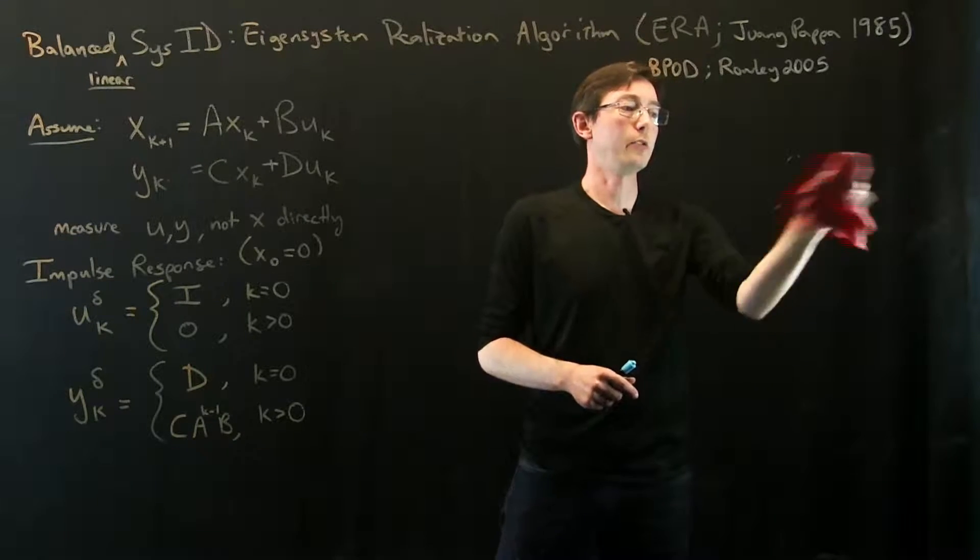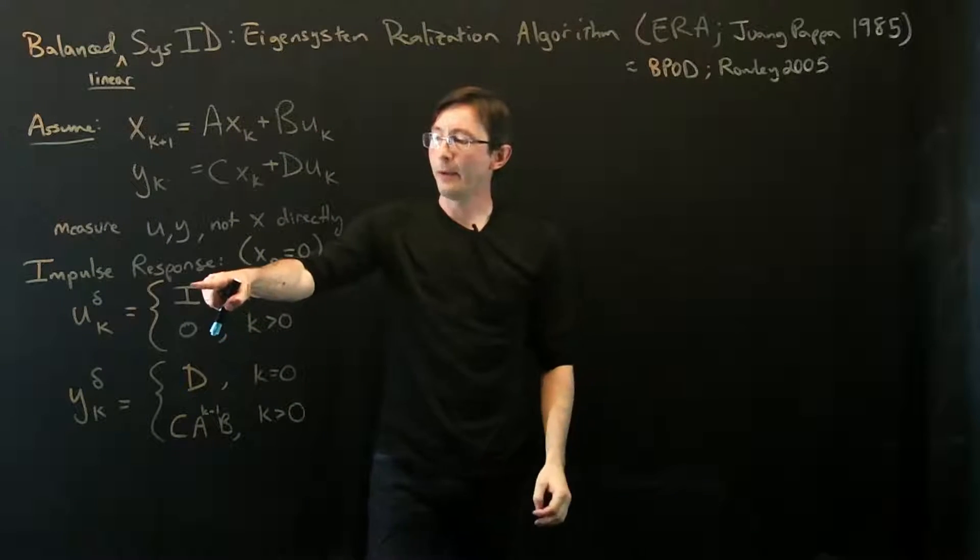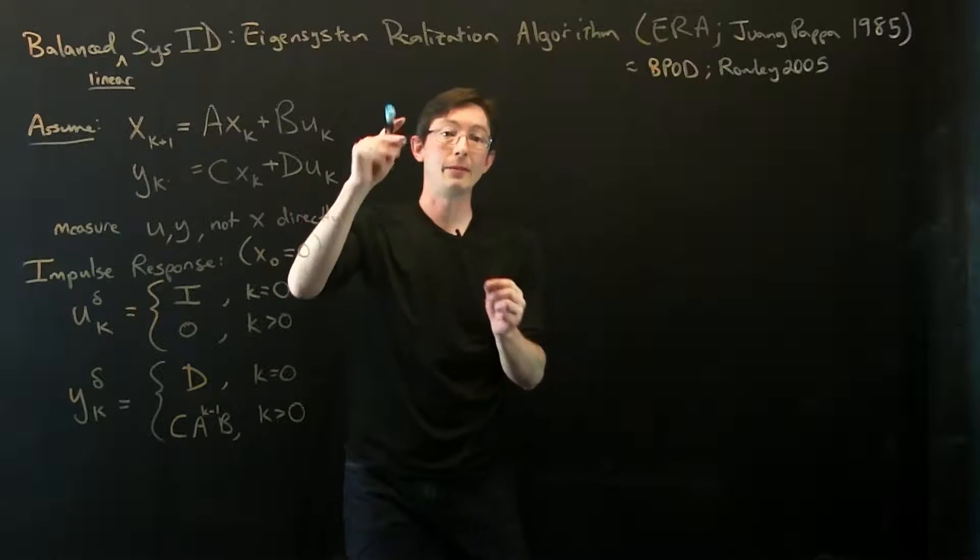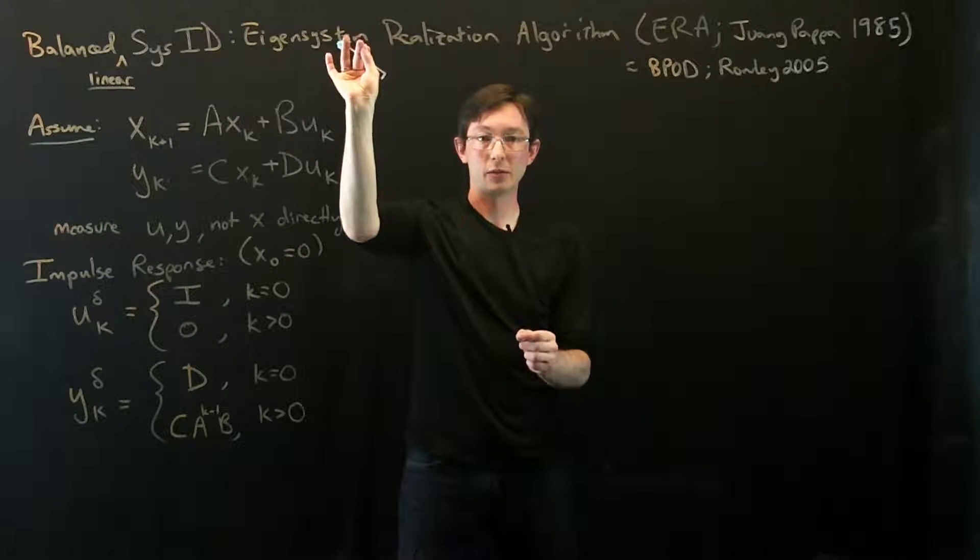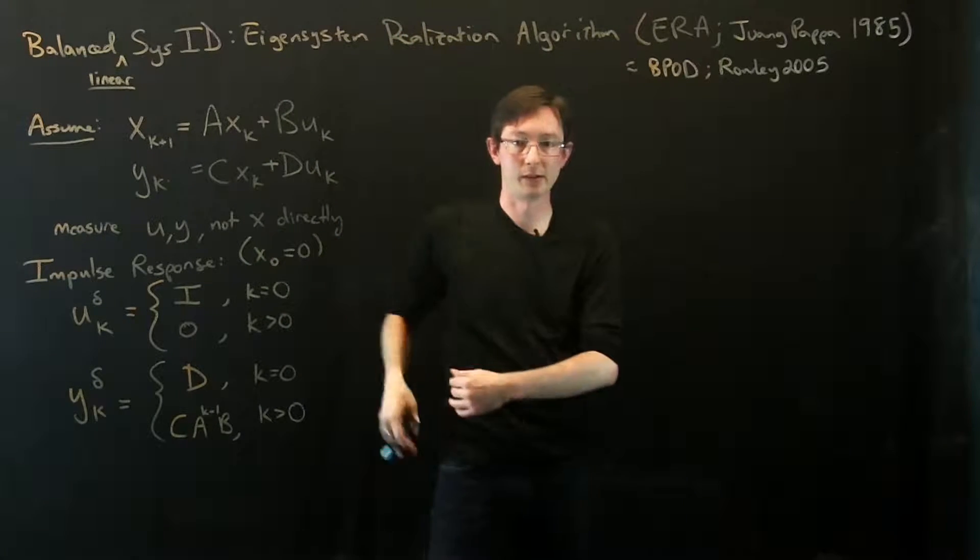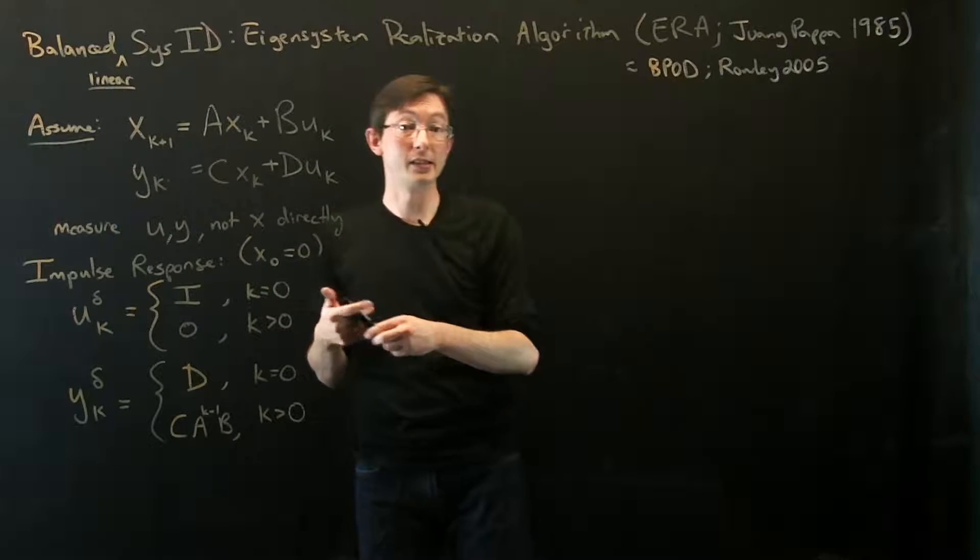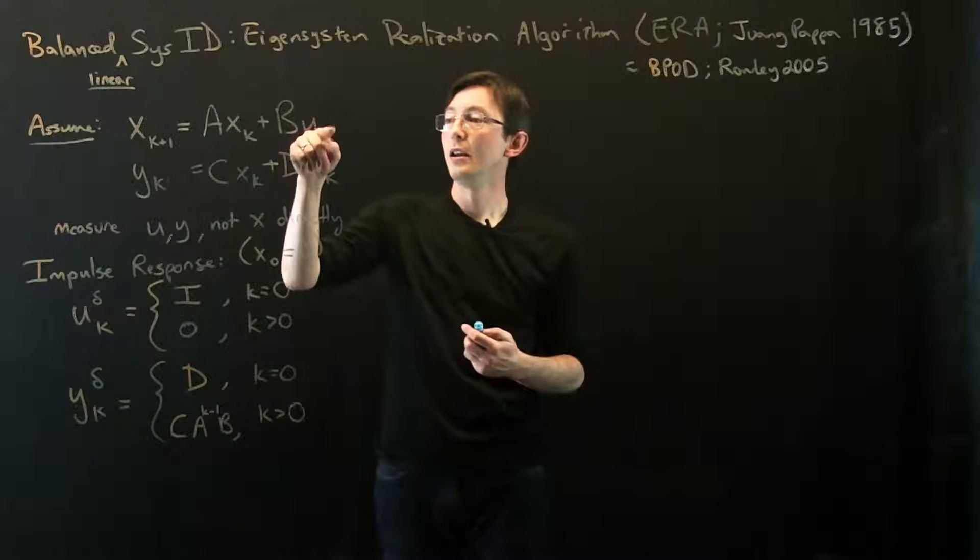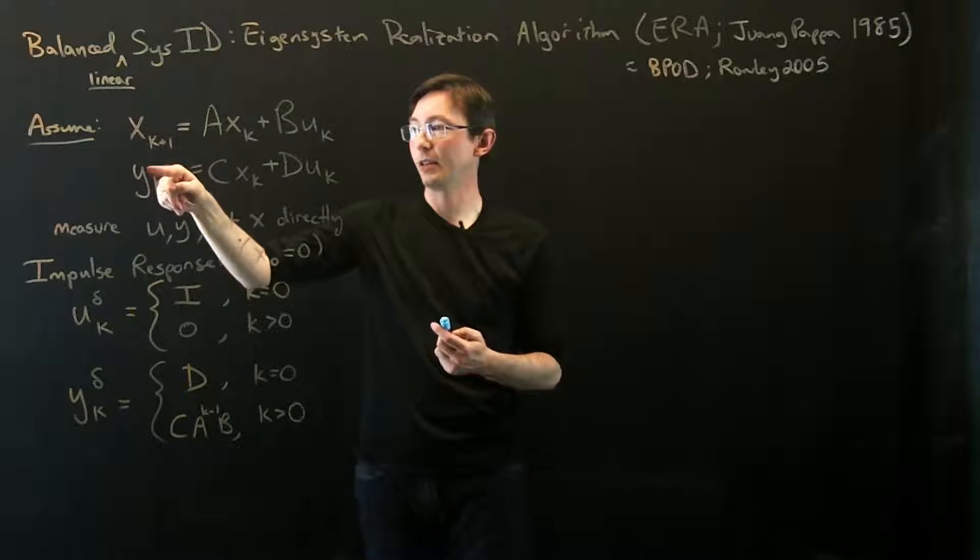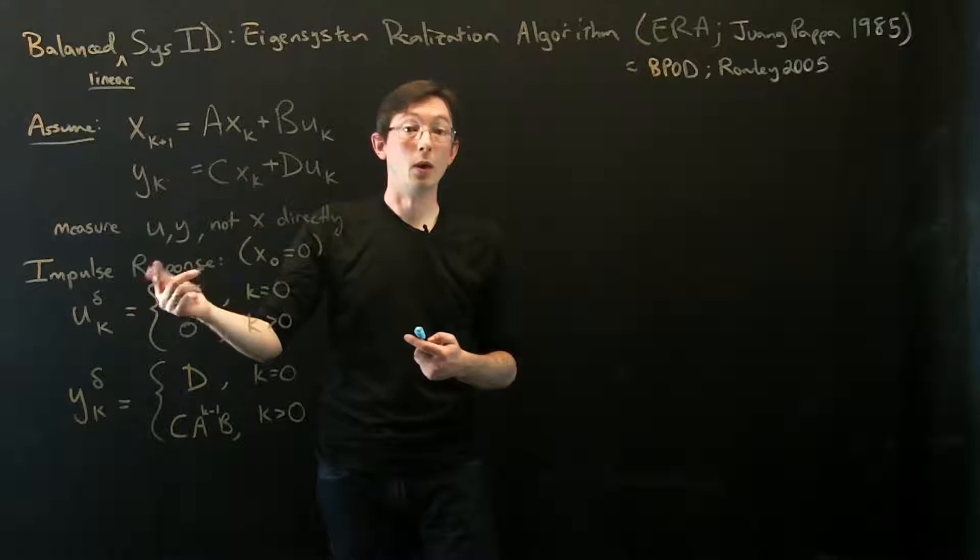What I'm going to do is walk you through how to compute this discrete time impulse response. I'm using the identity matrix here for my input because I might have multiple inputs and I might excite them individually: the first one, the second one, the third one. That would be an identity matrix of delta functions. But if you want to think about single input and single output systems, which can be a little bit easier, and that's probably how I usually think about it. So, single input, single output, then B and C are vectors, and this would just be a 1.